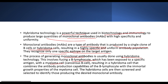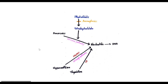The hybridoma cells are created, then screened, then identified as monoclonal antibody producers, and finally large-scale produced.